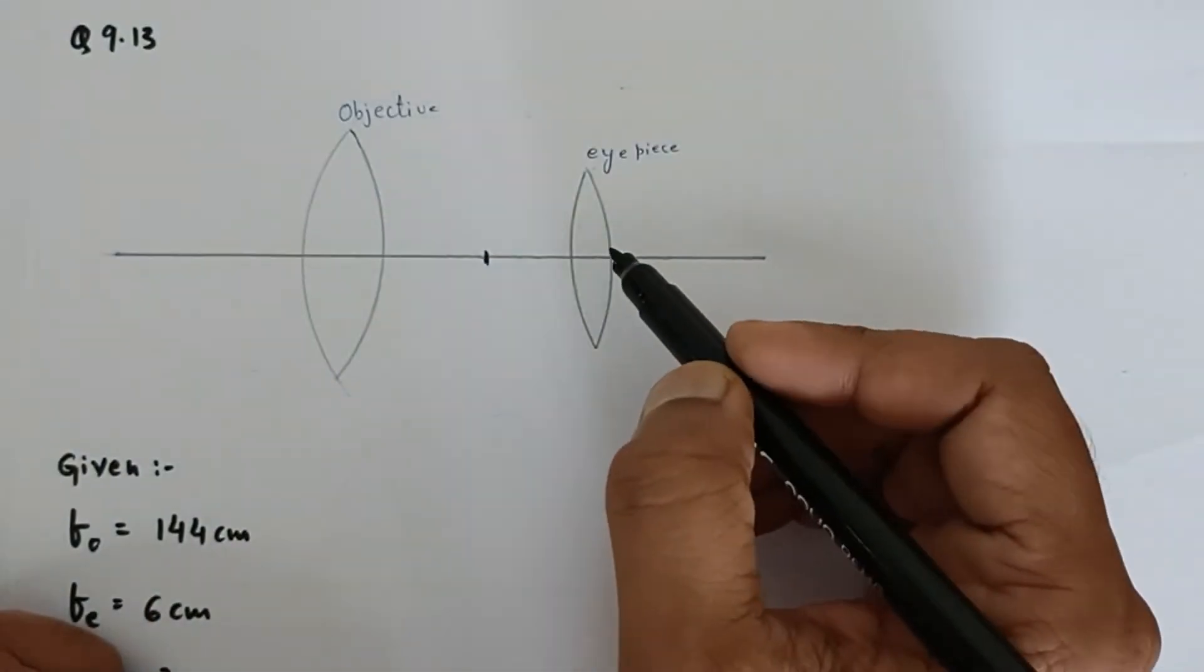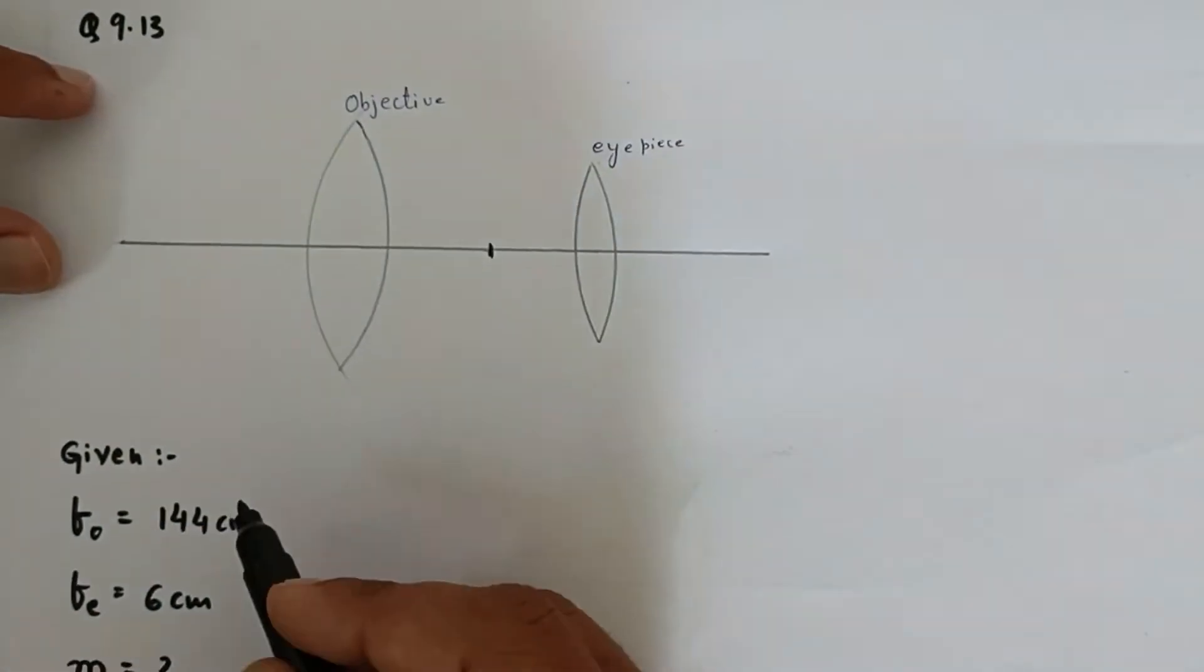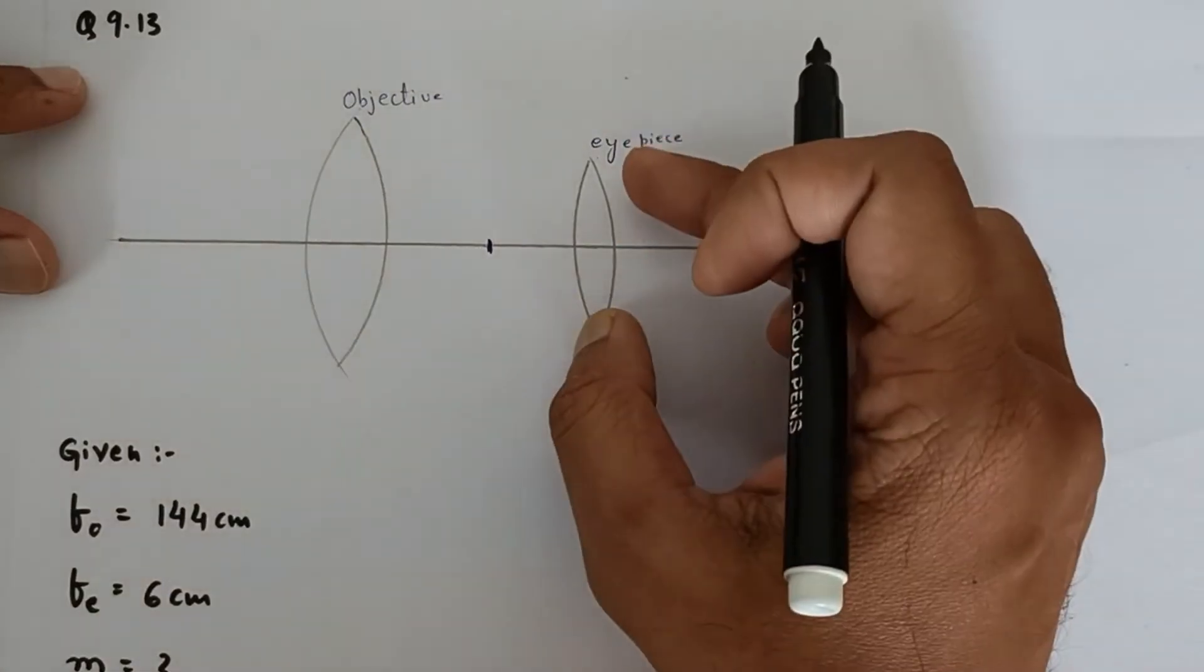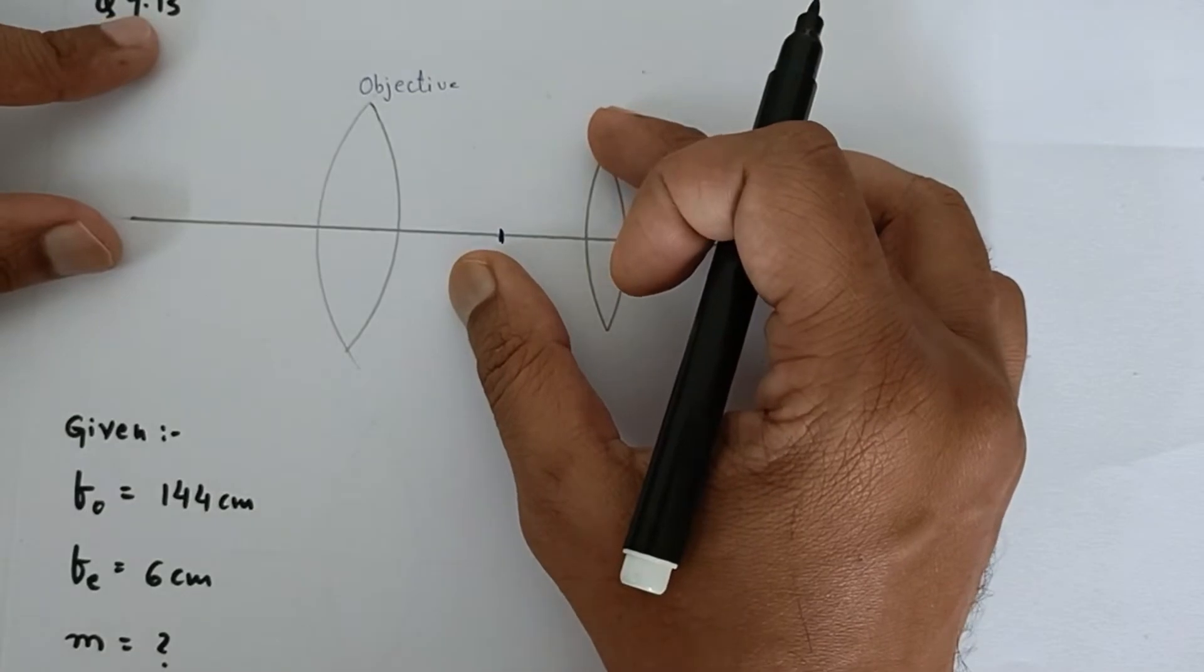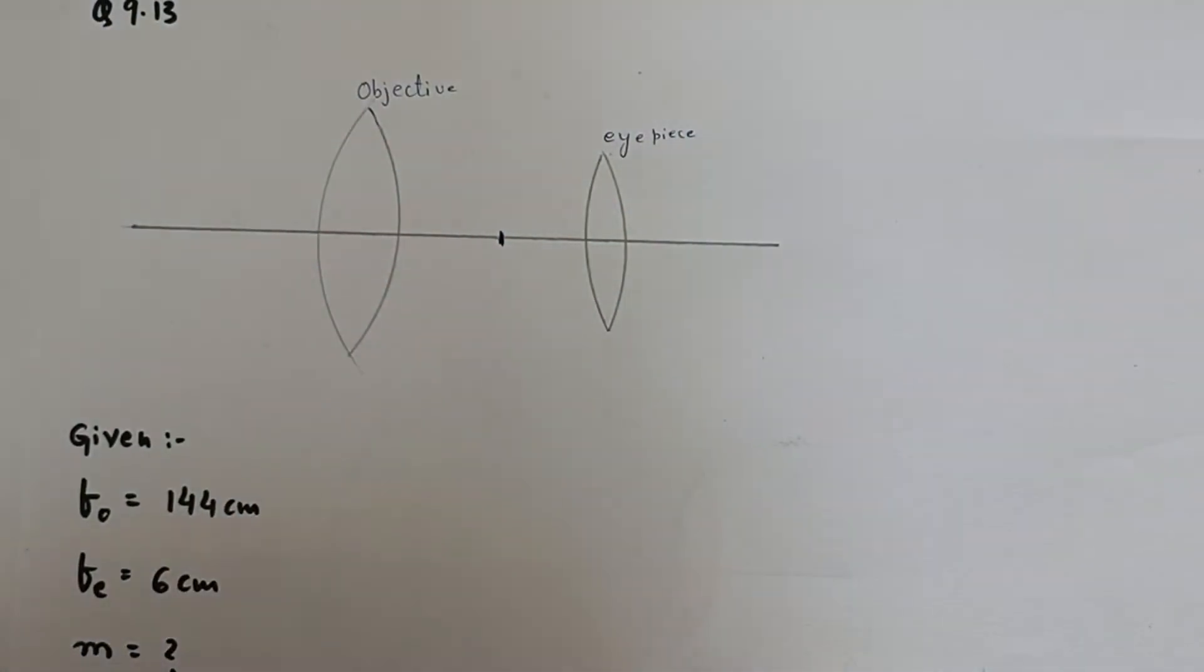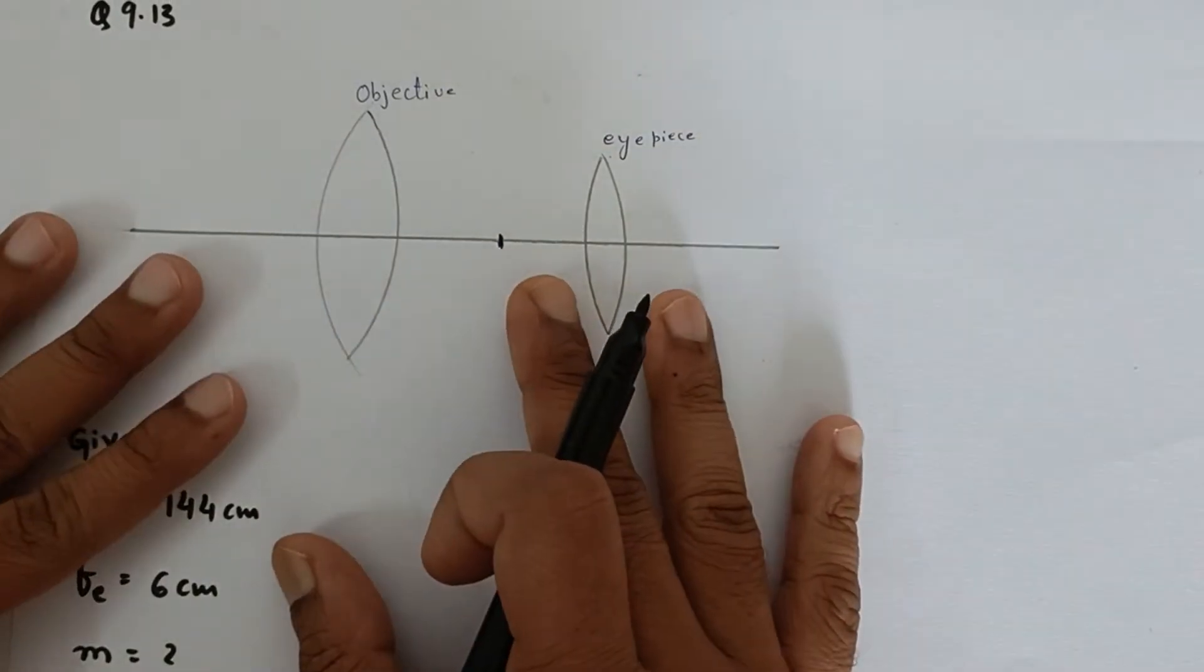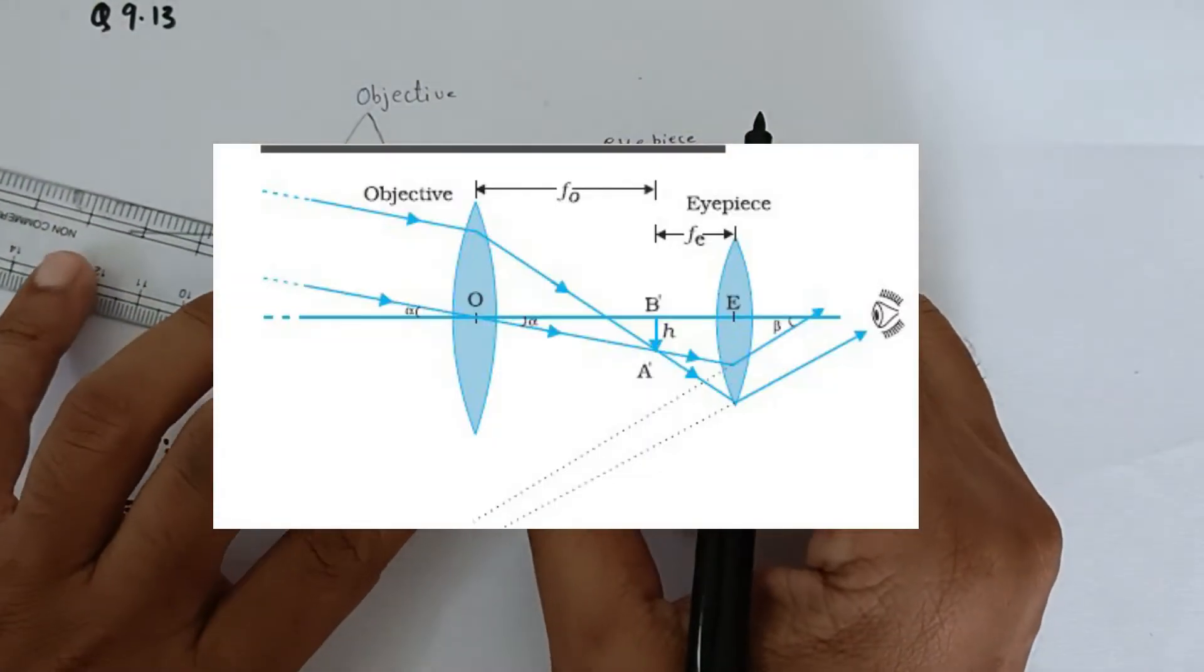The problem says that this is a telescope whose objective lens, which is facing towards the object, has the focal length fo, and the eyepiece has focal length fe. They are asking us to find the magnifying power and the separation between both the lenses. Now there are two cases, but by default we are supposed to follow the textbook diagram, which states something like this.